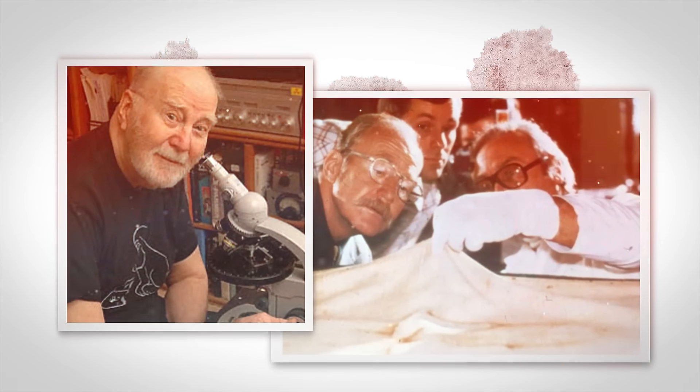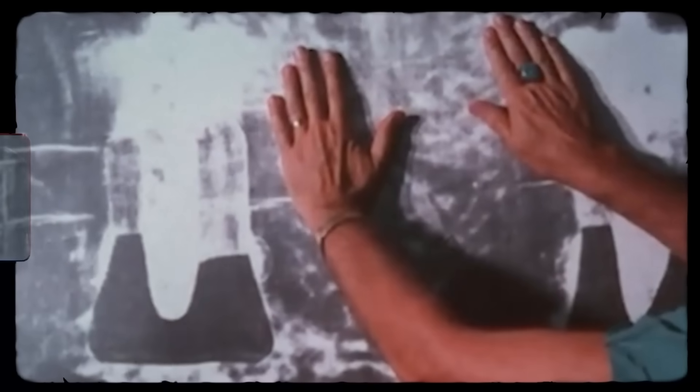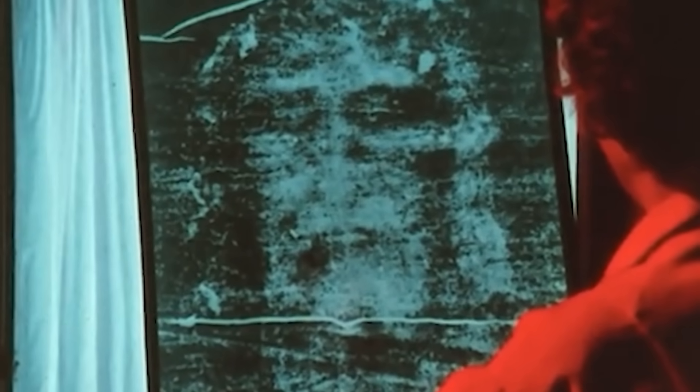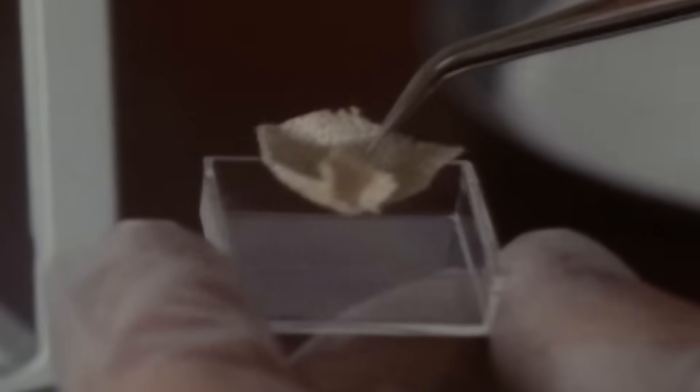A chemist named Raymond Rogers, who was part of the original Shroud of Turin Research Project, STURP, in 1978, decided to investigate. He obtained leftover threads from the 1988 sample. What he found was stunning. Under the microscope, he saw that the sample fibers were chemically different from the fibers from the main body of the shroud.